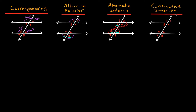Now lastly, we have consecutive interior angles. Again we have the word interior, so we're talking about three, four, five, and six. But this time we're talking about consecutive — angles that are on the same side of this transversal line. So consecutive interior angles would be four and six, and the other pair would be three and five. And these are not congruent — these are supplementary, meaning they add up to 180 degrees. So for example, if angle four is 100 degrees, then angle six would be 80 degrees. If angle five is 100 degrees, then angle three would be 80 degrees. You can see these add up to 180.